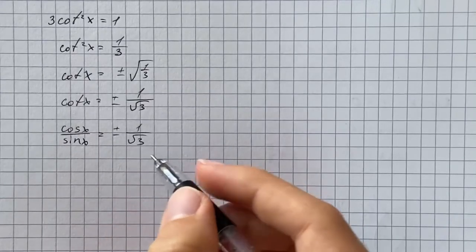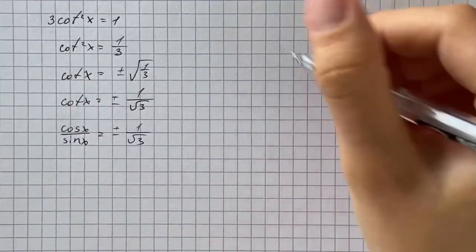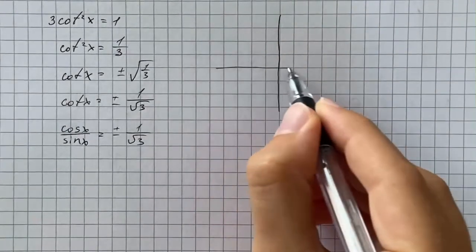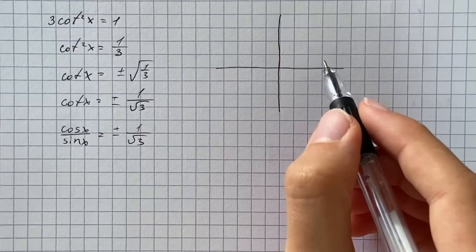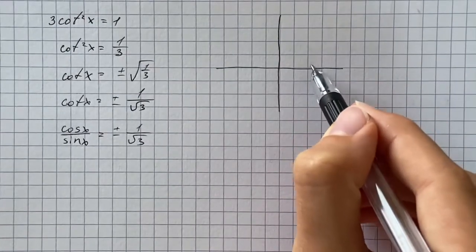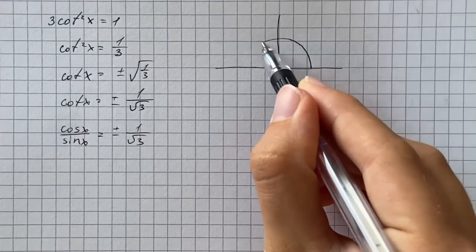So now we're going to be thinking about where on the unit circle the ratio of x coordinate to y coordinate is going to be equal 1 over square root of 3.